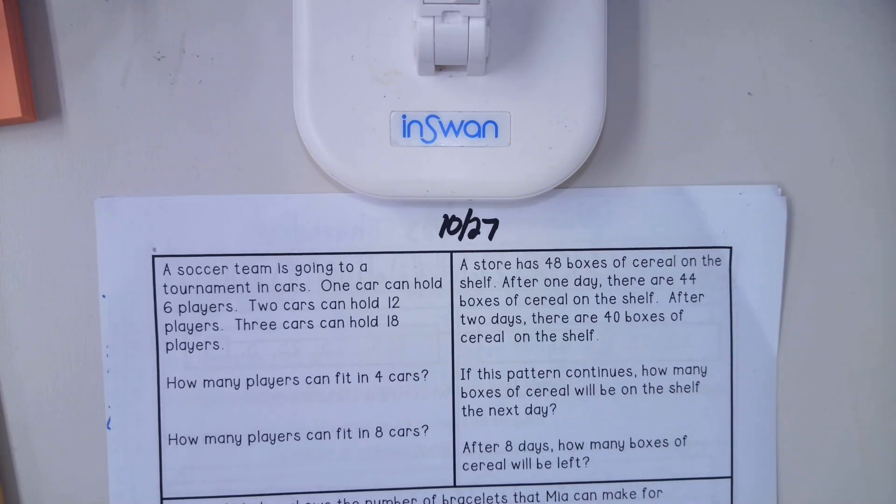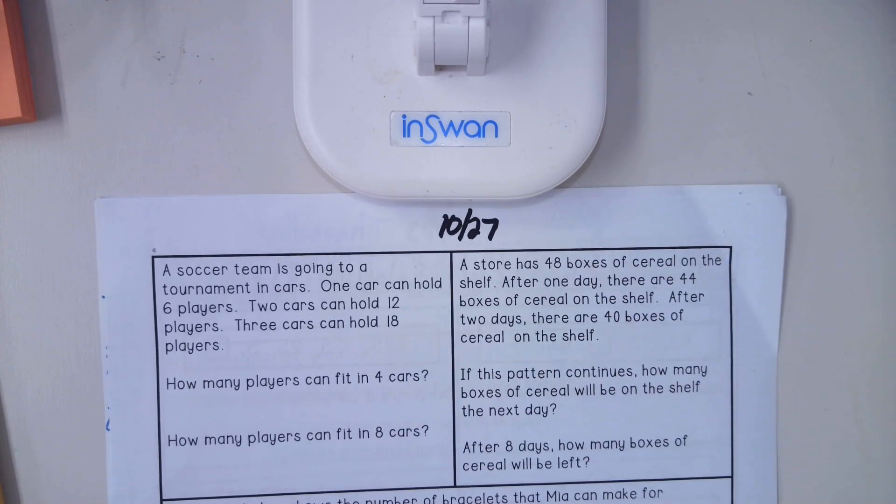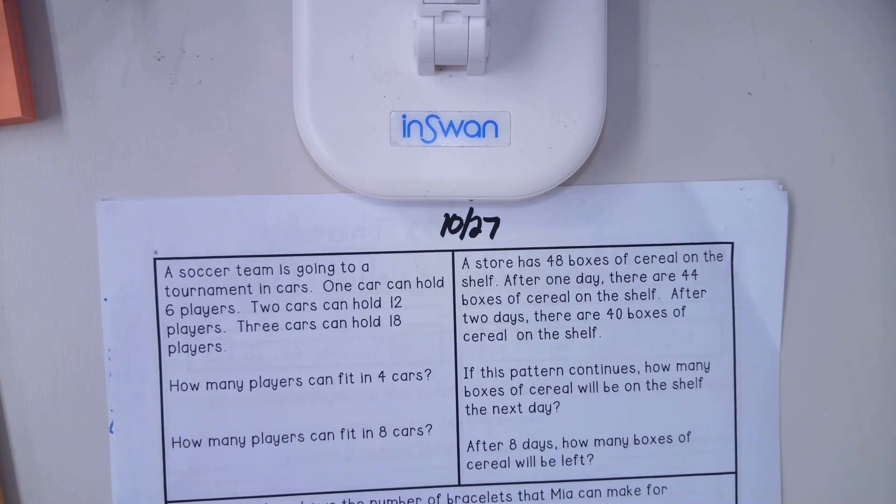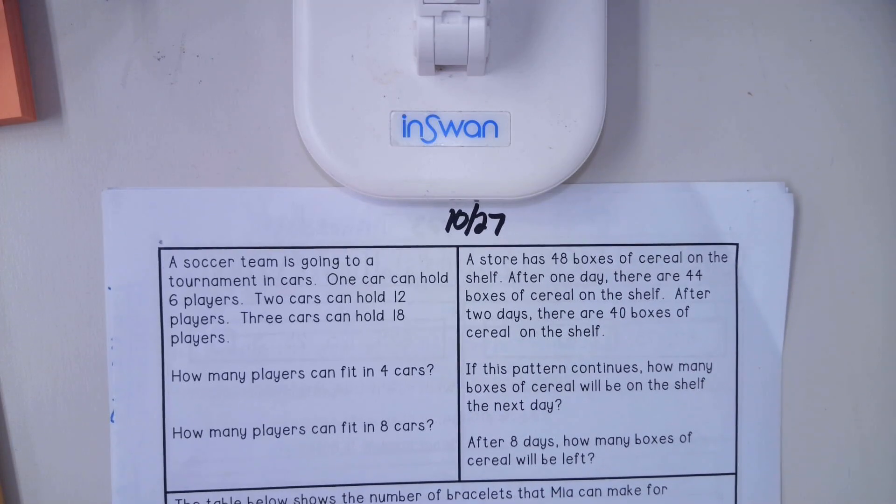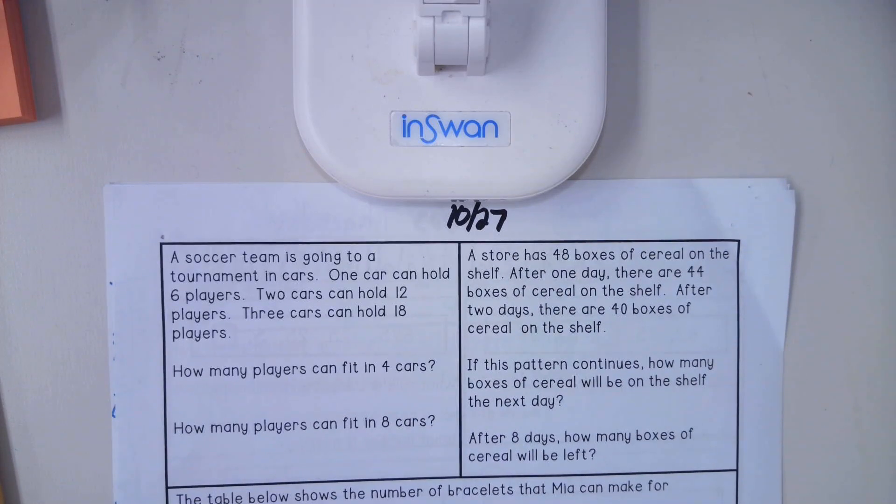Hey good afternoon everyone, this is homework for October 27th. We are still working on multiplication and we are still working on patterns. So let's begin with our first problem. It says a soccer team is going to a tournament in cars. One car can hold six players.